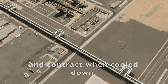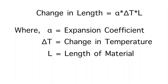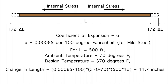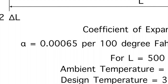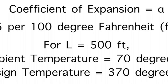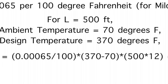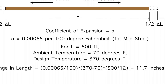We know from science that things expand and contract with changes in temperature — they expand when heated and contract when cooled down. The change in length is calculated using the formula alpha times delta T times L, where alpha is the expansion coefficient, delta T is the change in temperature, and L is the length of material. For example, mild steel has an expansion coefficient of 0.00065 per 100 degrees Fahrenheit. If you heat a 500-foot long pipe from a 70°F ambient temperature to a 370°F design temperature, it will increase in length by 11.7 inches, assuming the ends are free to move.